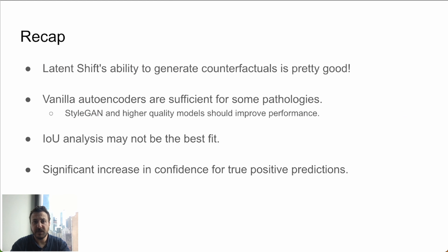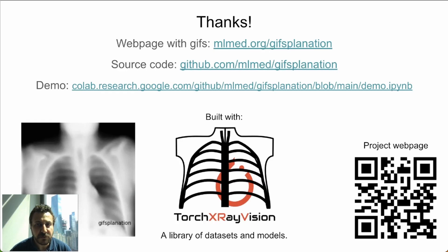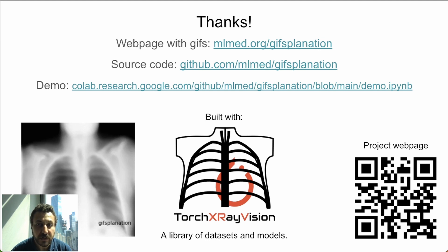To recap: the latent shift approach works pretty well qualitatively. Autoencoders get the job done. IOU analysis may not be the best fit here, at least with the annotations we have. And we find a significant improvement in prediction confidence for true positive predictions. Thanks for watching this talk. All experimental source code is available and the models used are provided in the GeorgeX Revision Library. At this CoLab link, you can find a working demo of this method where you can input your own images.